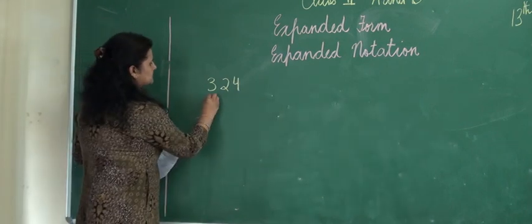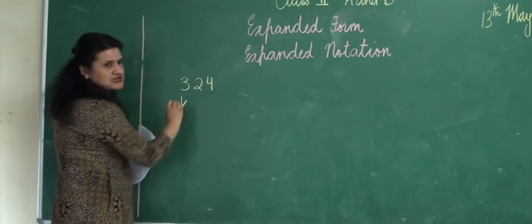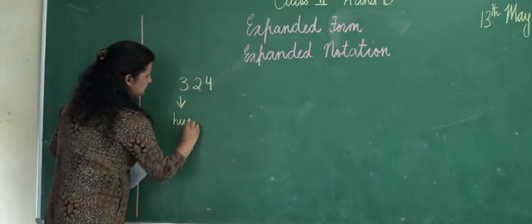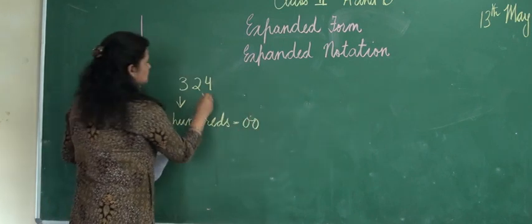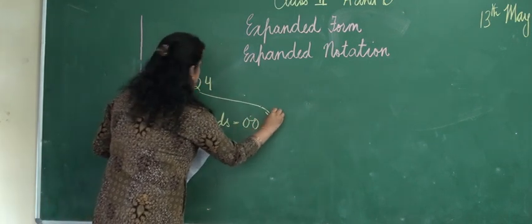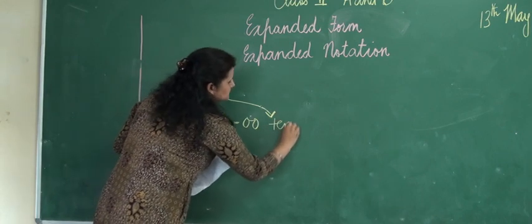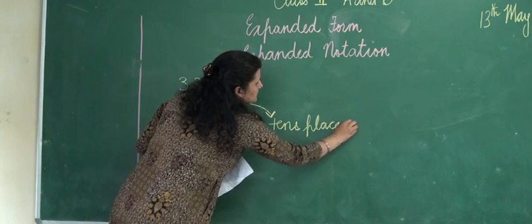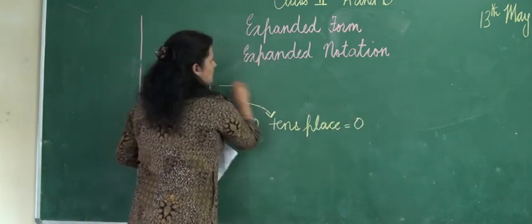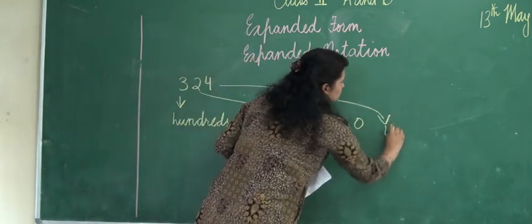So first I am going to teach you the place. 3 is in 100's place - 100's, and you know 100's you have two 0s. And 2 will be in 10's place, 10's place with a 0, and 1's you just have to write 4.